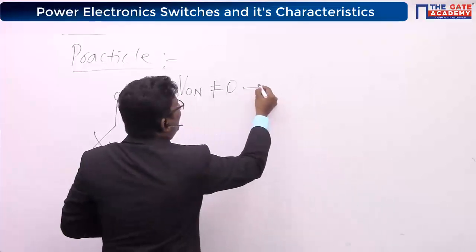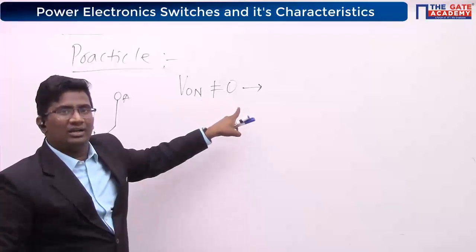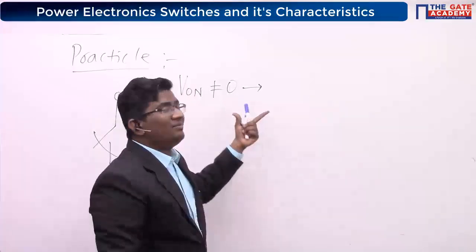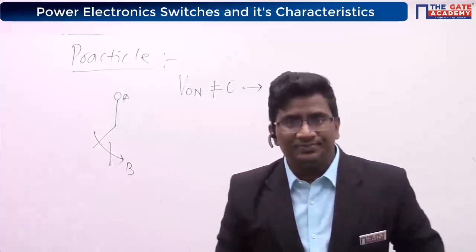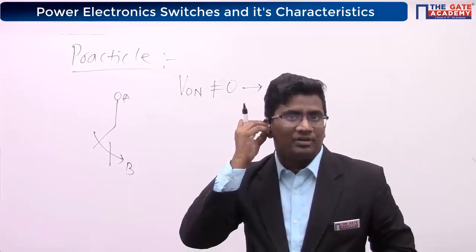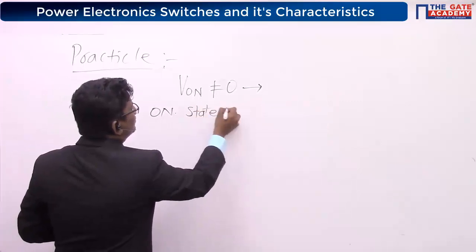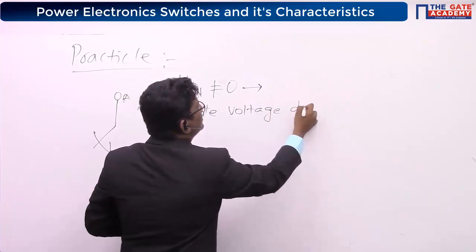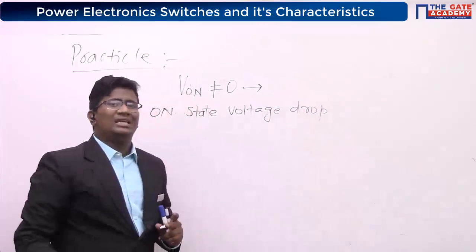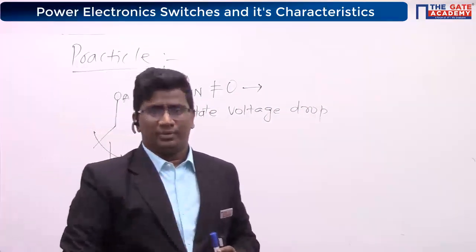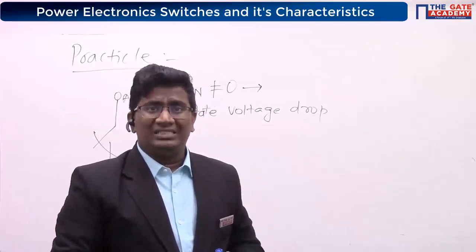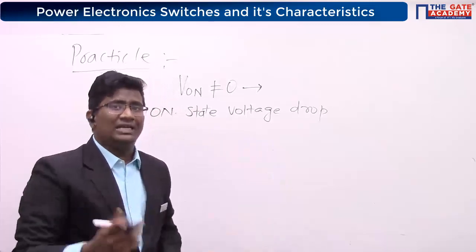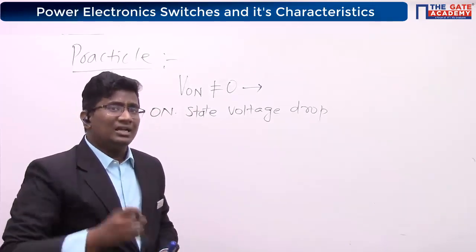This drop is called — it is not equal to zero, meaning some finite number. That drop is known as the on-state voltage drop, or we can call it the forward conduction drop.